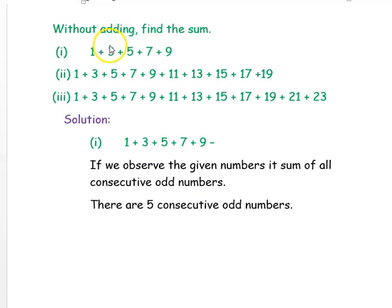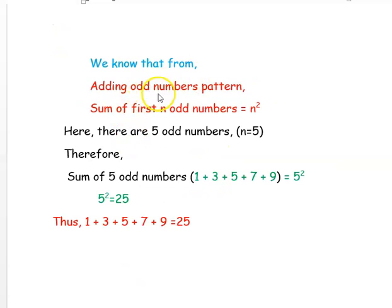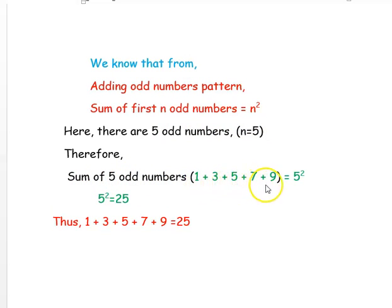Our next example is: without adding, find the sum. The first question is 1 + 3 + 5 + 7 + 9. If you observe the given numbers, it is the sum of consecutive odd numbers — there are five consecutive odd numbers. We know from the adding odd numbers pattern that the sum of first n odd numbers equals n². Here n = 5, so 1 + 3 + 5 + 7 + 9 = 5² = 25.